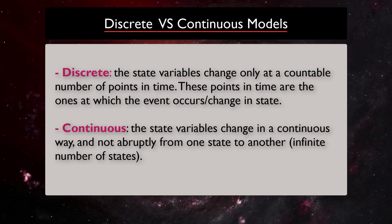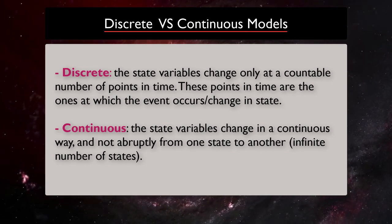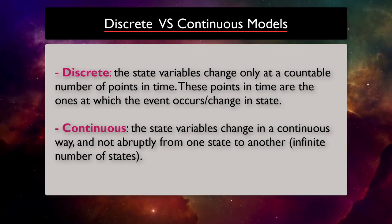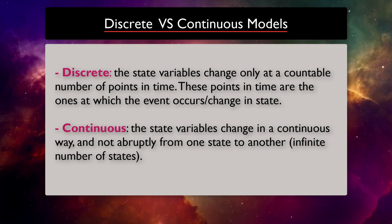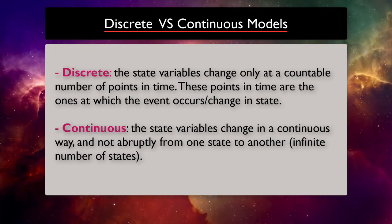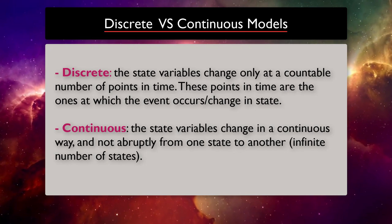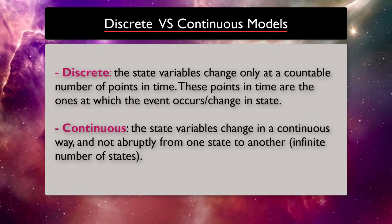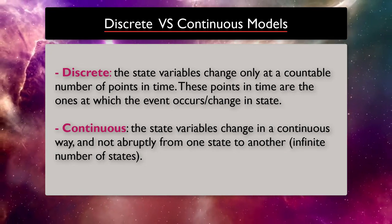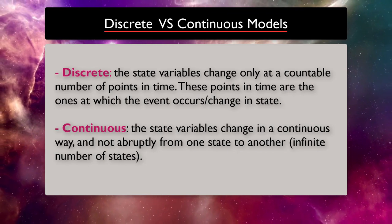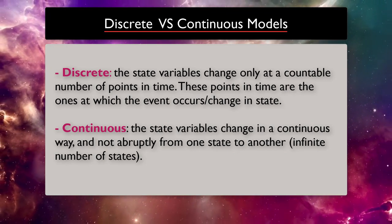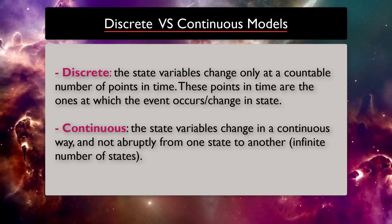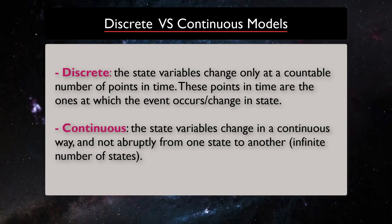In a discrete system, the state variables change only at a countable number of points in time. These points in time are the ones at which the event occurs that may change the state. While in continuous dynamical system, the state variables change in a continuous manner and not abruptly from one state to another, which gives us infinite number of states. In other words, we can say when the reals are acting, the system is called a continuous dynamical system. And when the integers are acting, the system is called a discrete dynamical system.